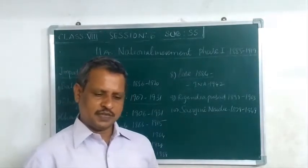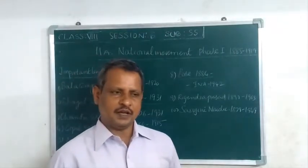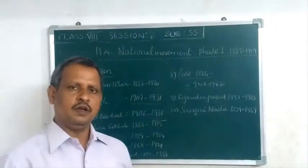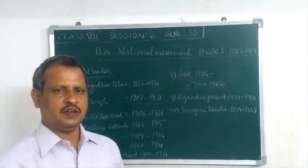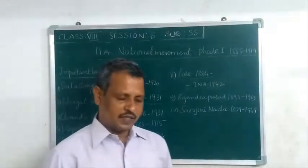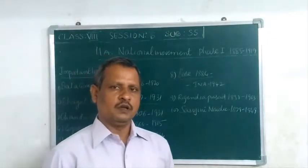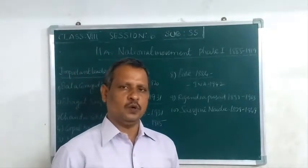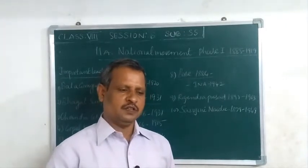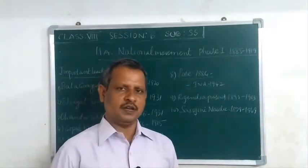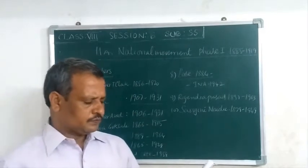The three periods are called the first, second, and third period. The Gandhi era started from 1920 to 1947. The last major weapon of Gandhi was the Quit India Movement, with the slogan 'Do or Die' — demanding the British leave India immediately.